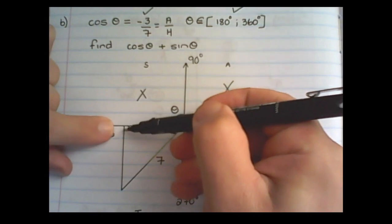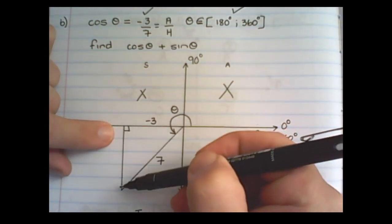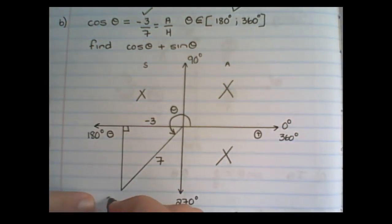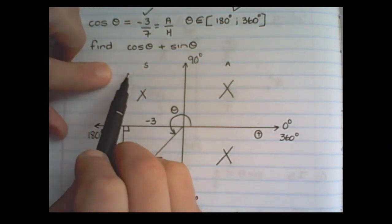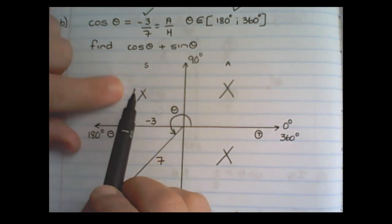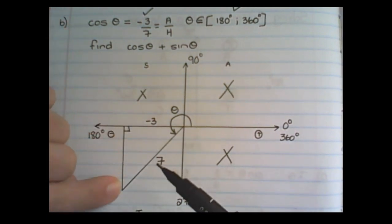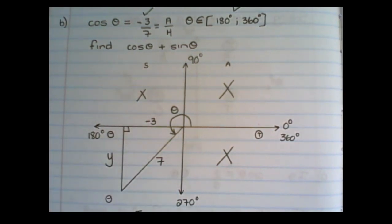It's the same for the value which we will find for y. The value for y, because it's below the axis, would be negative. If the triangle were to be in quadrant 2, the y value would be positive, because I'm going upwards. But because I'm going down, I know that this y value would be a negative value.